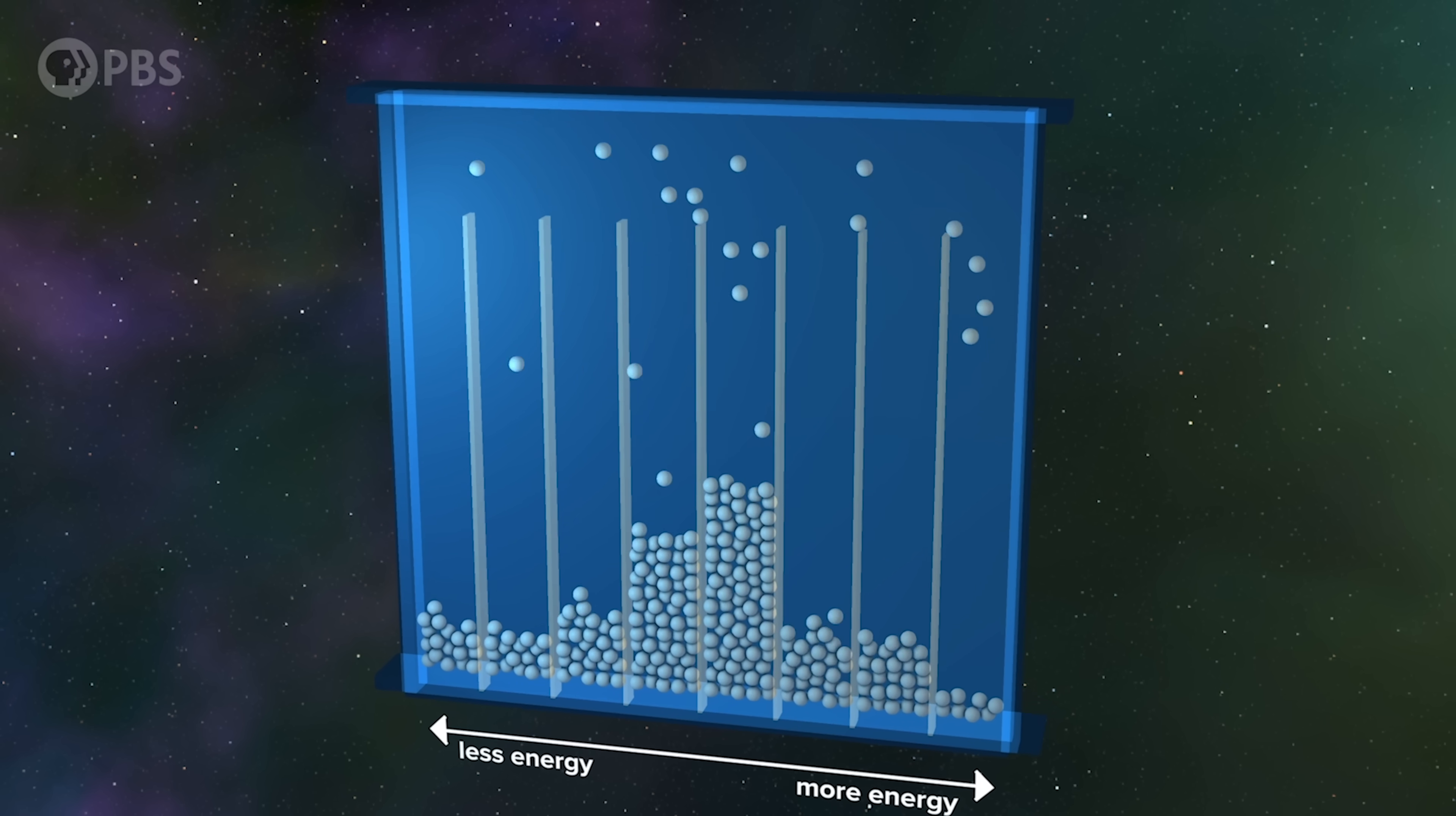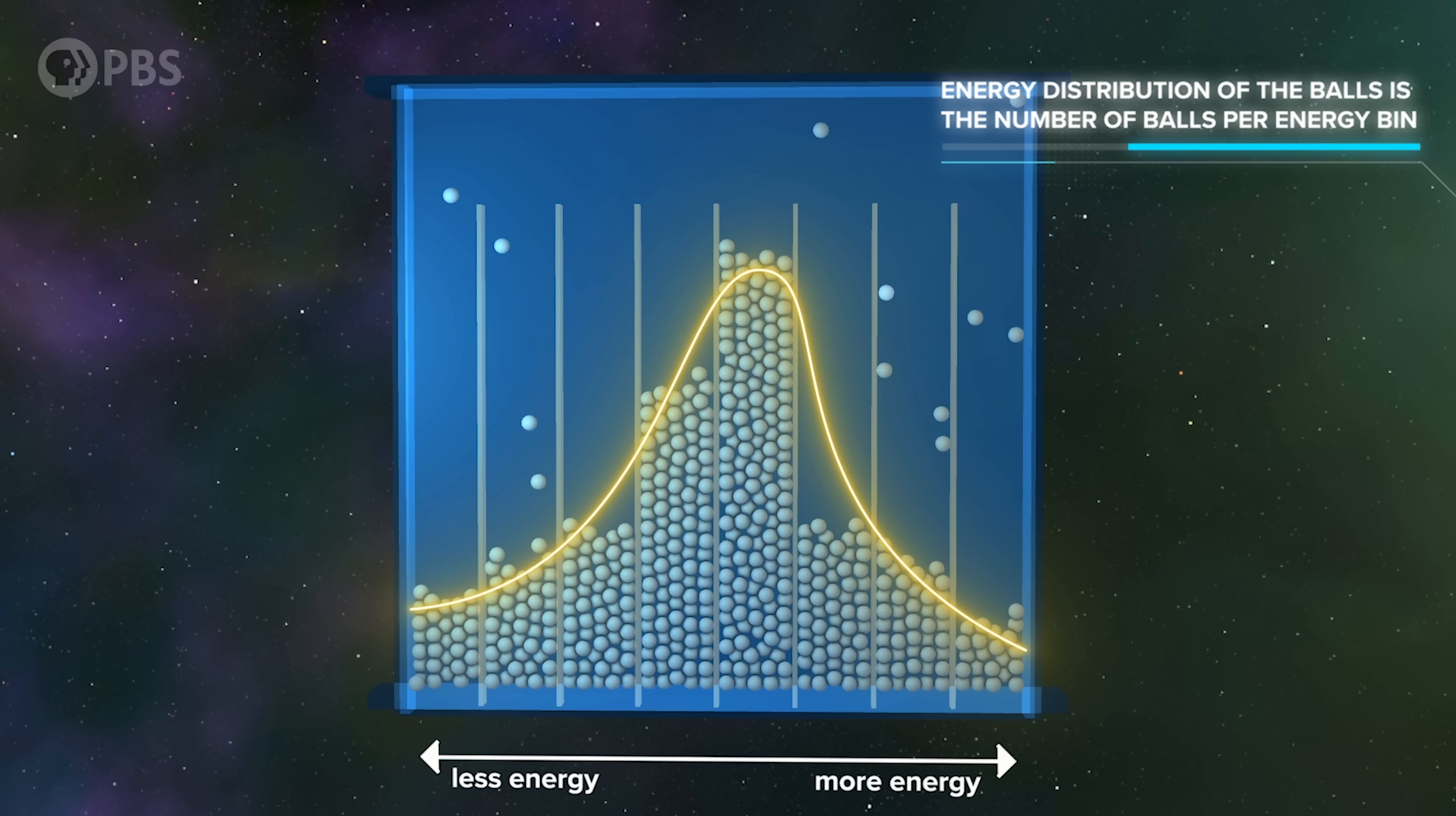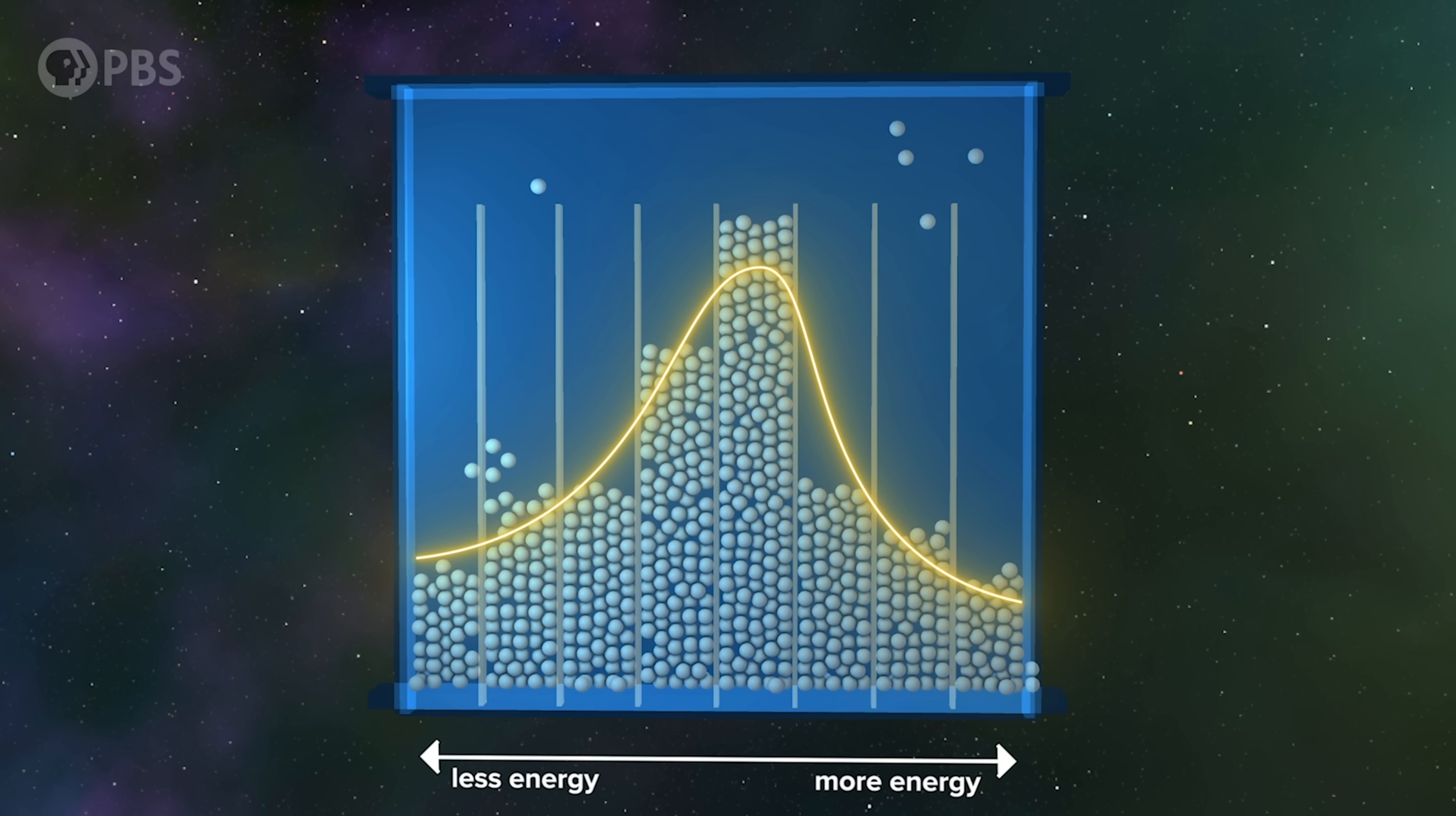We can think about their energy distribution in the same way that we thought about the distribution of positions. Divide all possible energies the balls can have into a series of energy bins. The energy distribution of the balls is just the number of balls per energy bin. Just as with the positions, balls will move between energy bins as they interact. And just as with position space, over time the system will explore all possible configurations of this energy space.